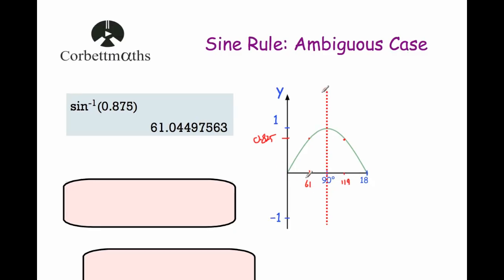So to find a more accurate answer, rather than doing 90 take away 61 to be 29 and then adding the 29 onto the 90, we would do the 90 subtract this answer, and then add that result onto 90. And you would get the answer of 118.955 degrees.